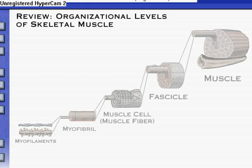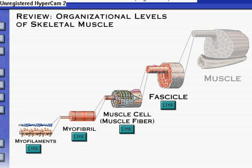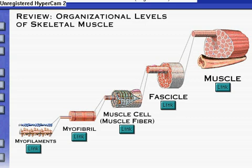Now that we have taken a skeletal muscle apart, let's put it back together, starting with its smallest building blocks, the myofilaments. There are two types of myofilaments: thick and thin. Many of these myofilaments bundled together make up a single myofibril. Numerous myofibrils are contained in a muscle cell or muscle fiber. In turn, many muscle cells are packed into a fascicle. And finally, many fascicles make up a whole skeletal muscle. This bundle within a bundle organization is well suited to the function of skeletal muscle, as we'll see throughout the module.